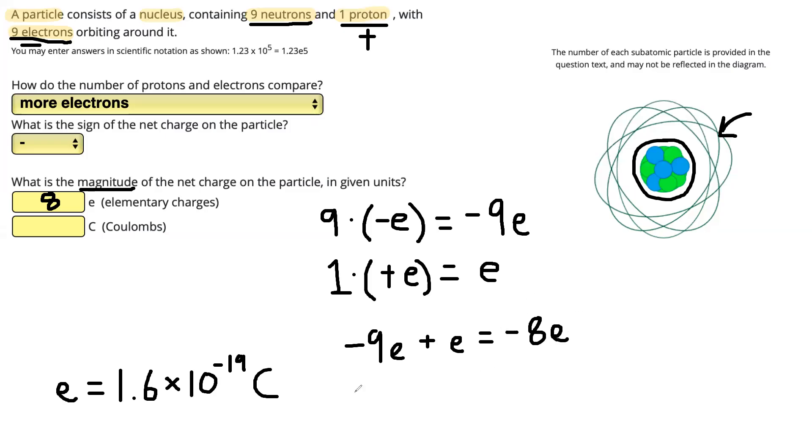So if we know that our charge is 8e, we can calculate that in terms of Coulombs by just multiplying out by our e value. So negative 8e is the same as negative 8 times e, which is 1.6 times 10 to the negative 19 Coulombs. If we multiply that out, we're going to get an answer of negative 1.28 times 10 to the power of negative 18 Coulombs.